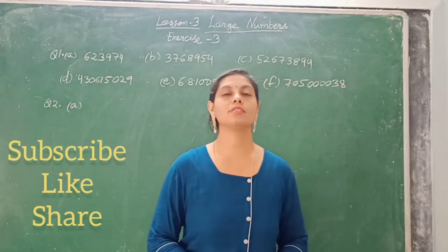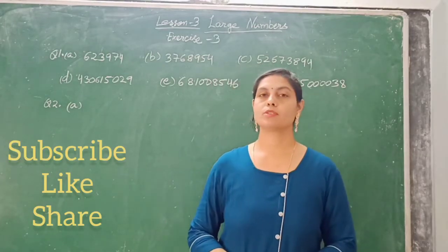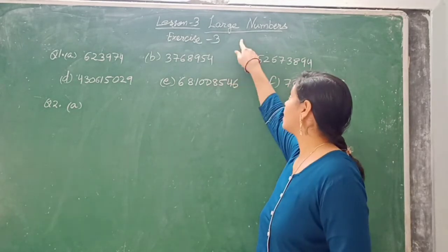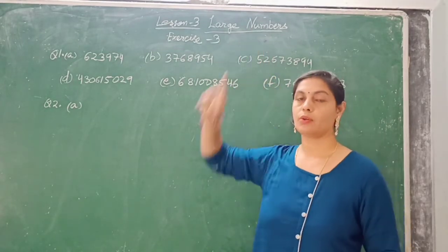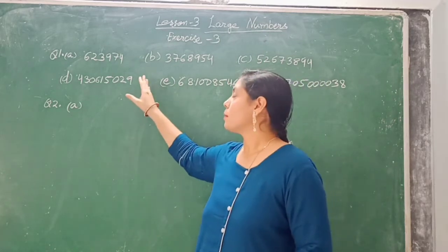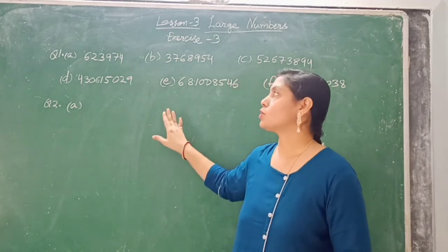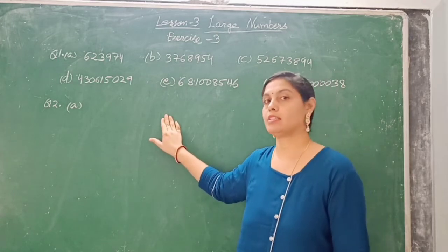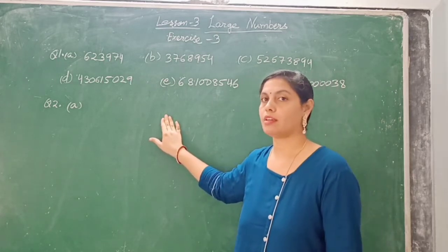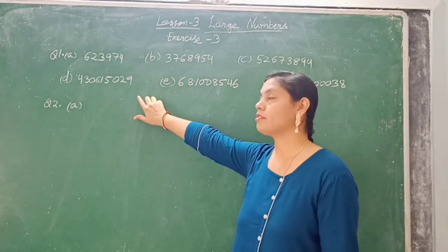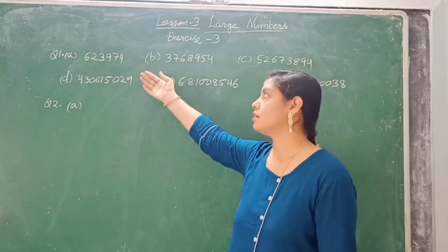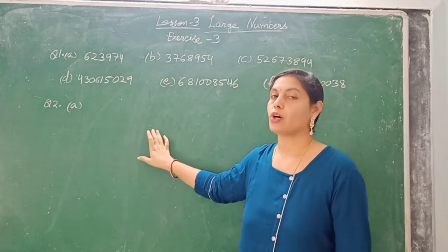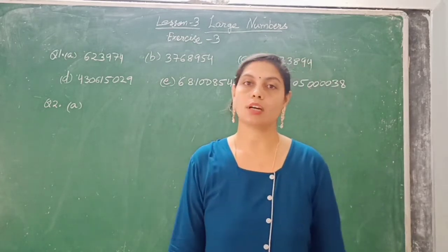Hello dear students. In this video we will solve exercise 3 of lesson 3, large numbers. So question number 1: here we have to put commas according to the Indian place value chart. We have to rewrite these numbers using commas according to the Indian place value chart.